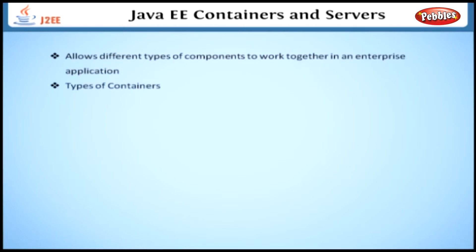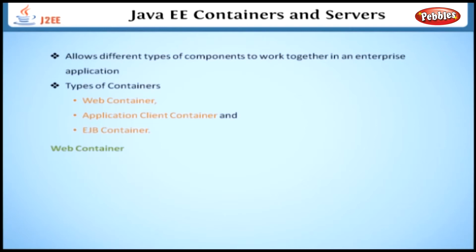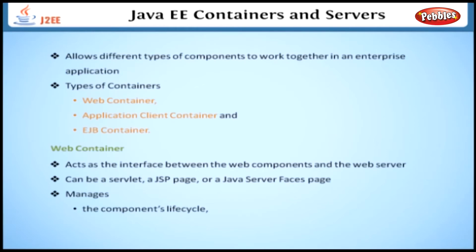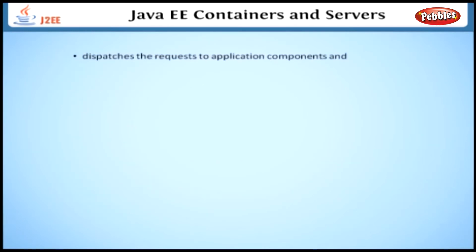The different types of containers are web containers, application client containers, and EJB containers. The first one is the web container. The web container acts as the interface between the web components and the web server. A web component can be a servlet, a JSP page, or a Java Server Faces page. It manages the component's lifecycle, dispatches requests to application components, and also provides information about the request, such as the context data.